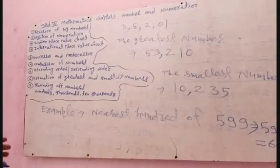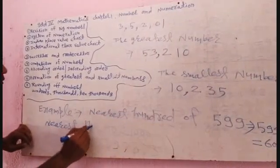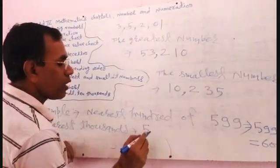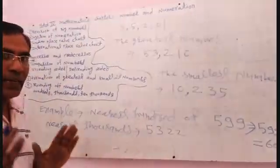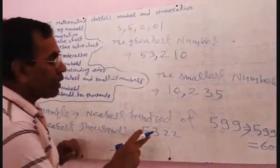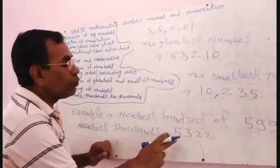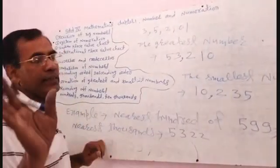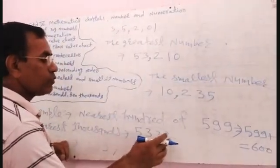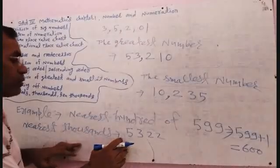Now I am giving you an example of nearest thousand. The number given is 5322. If you want to write the nearest thousand, you have to look at the hundreds digit. The hundreds digit should be five or more than five — then add one to thousands. If not, leave the thousands digit the same and make all other digits zero. Here, the hundreds digit is 3, which is less than five.